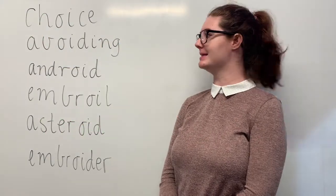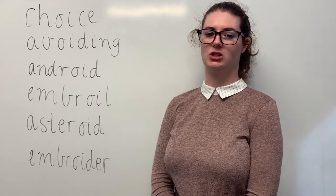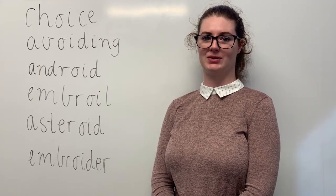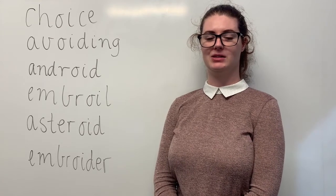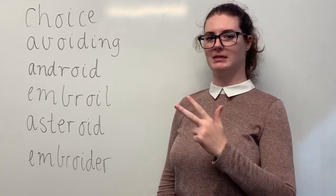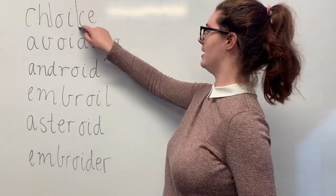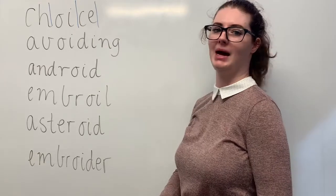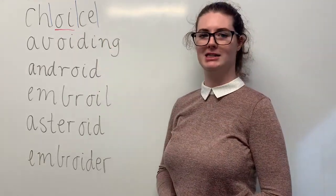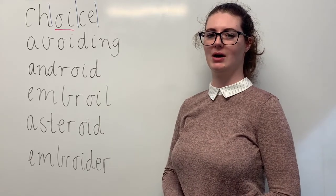These are our green words. Say choice. I find it hard to make a choice on what ice cream flavour I'm going to get when I'm at the ice cream store. The sounds in choice are, together, ch, oi, s. The letters in choice are c, h, o, i, c, e. The part we need to remember is the oi digraph making the oi sound. Can you teach it to me? Choice: c, h, o, i, c, e.